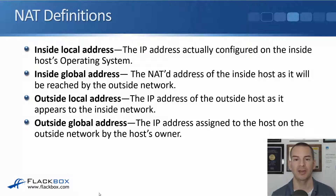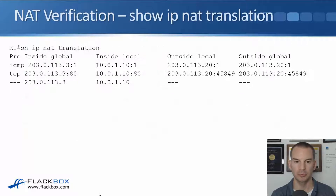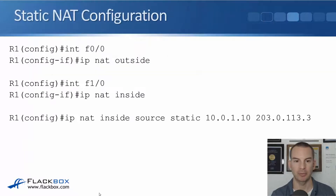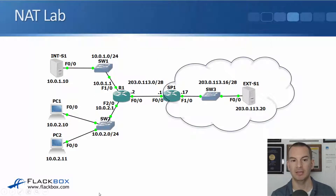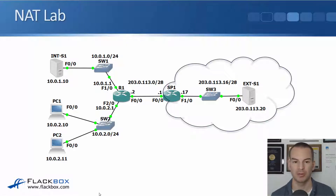Inside local address — that's the IP address actually configured on the inside host's operating system. So if we go back to the output from the show IP NAT translation, you see that inside local is 10.0.1.10. And if I go back to the network diagram, that is the IP address of server 1, 10.0.1.10 — that's what's actually configured in the Windows operating system.